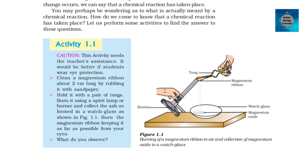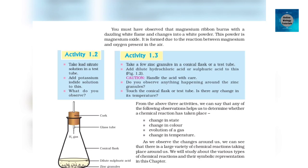Activity 1.1. Caution: this activity needs the teacher's assistance. It would be better if students wear suitable eyeglasses. Clean a magnesium ribbon about 3–4 cm long by rubbing it with sandpaper. Hold it with a pair of tongs. Burn it using a spirit lamp or burner and collect the ash so formed in a watch glass as shown in Figure 1.1. Burn the magnesium ribbon keeping it as far as possible from your eyes. You must have observed that magnesium ribbon burns with a dazzling white flame and changes into a white powder. This powder is magnesium oxide. It is formed due to the reaction between magnesium and oxygen present in the air.